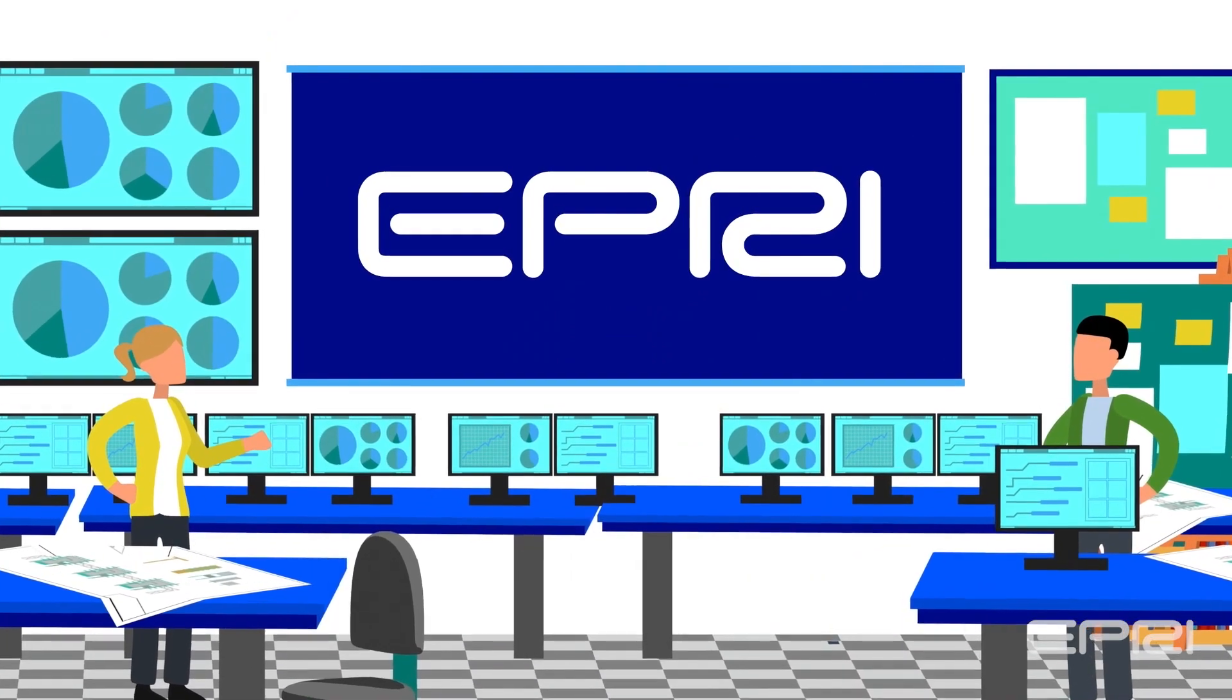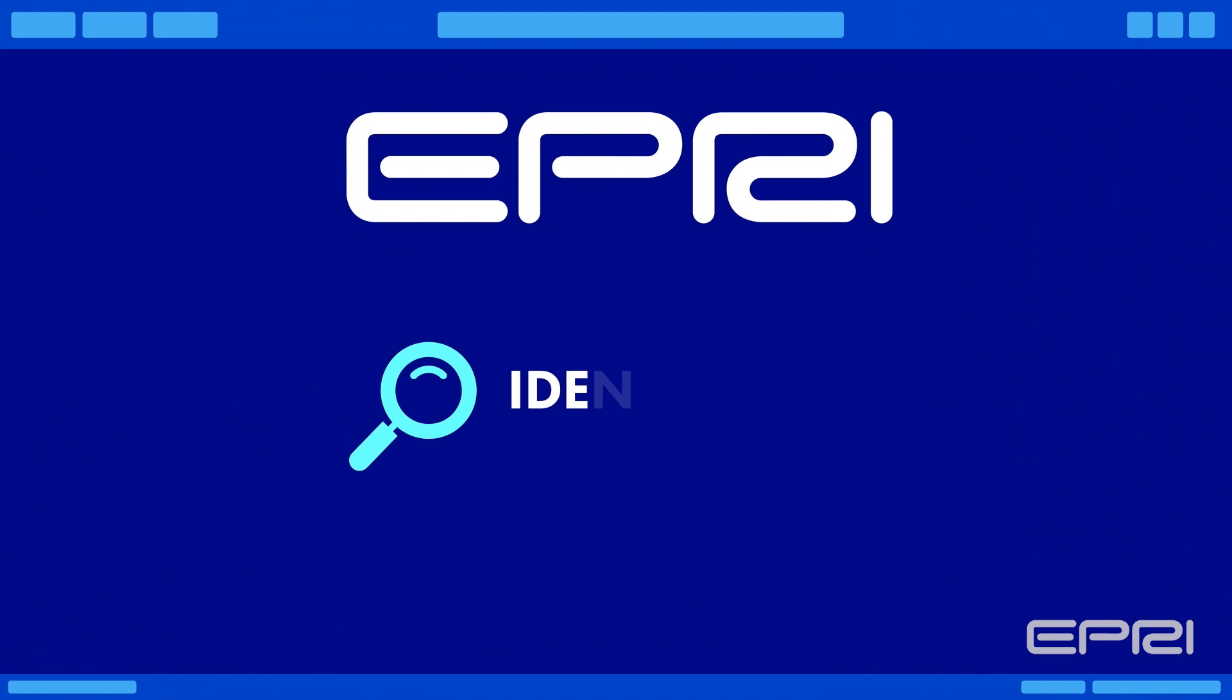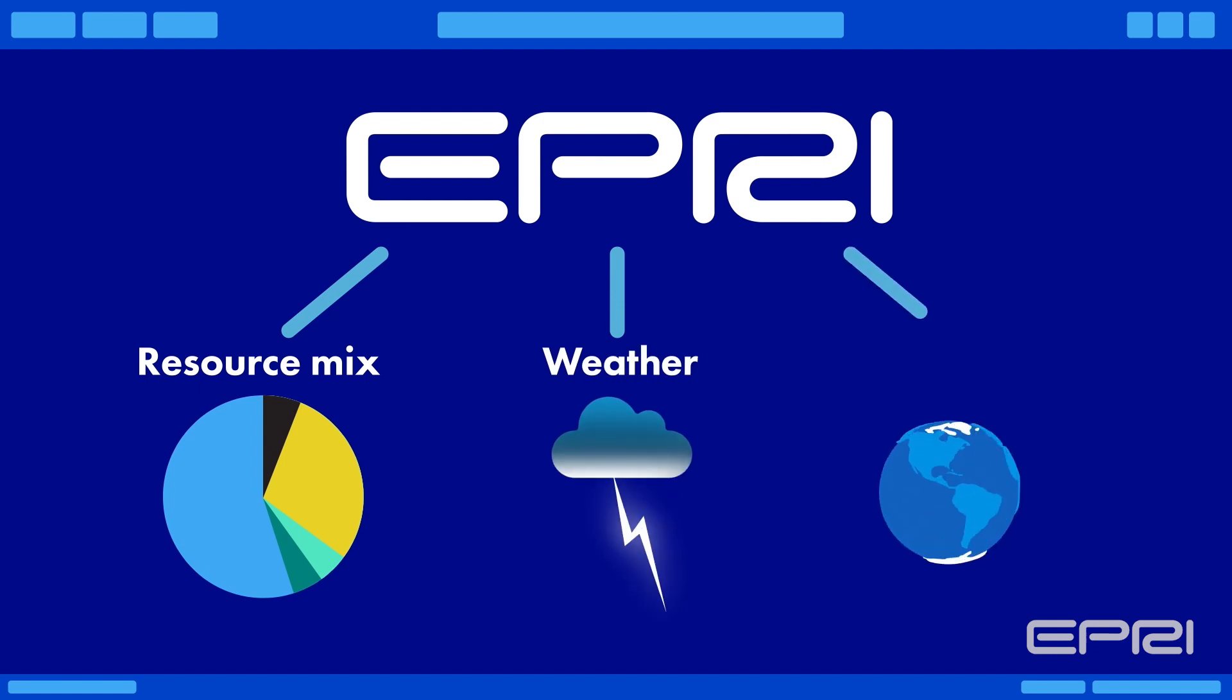Across EPRI's resource adequacy projects, we have focused on, first, understanding and identifying the scenarios that should be studied, including resource mix, weather, and climate.